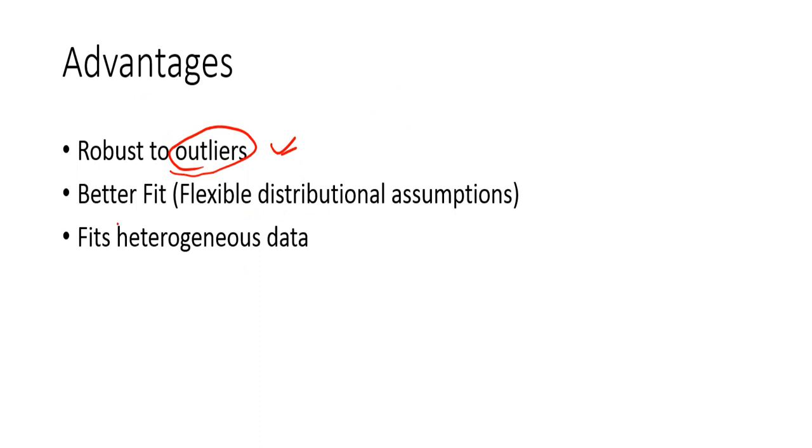If you have not so good data, which doesn't fit your distribution assumptions, like normal distribution and all. In linear regression, quantile regression gives a better fit because there is a flexible distribution assumption in the case of quantile regression. If your data is heterogeneous or some sort of heteroscedasticity is present in your data, quantile regression gives a better result.